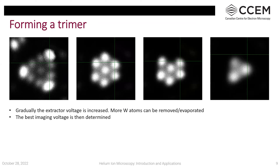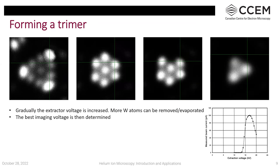The next step is finding the best imaging voltage by sweeping the extractor voltage to find the highest emission current. You can monitor either the trimer intensity or the measured beam current to find the maximum value. This process needs to be done on average every one week to one month. If using neon gas, you may need to reform the trimer more frequently.